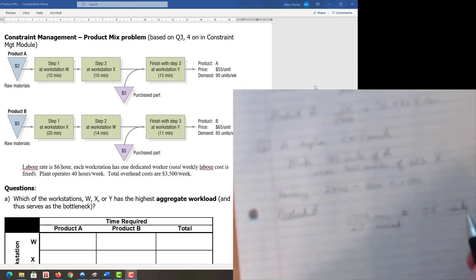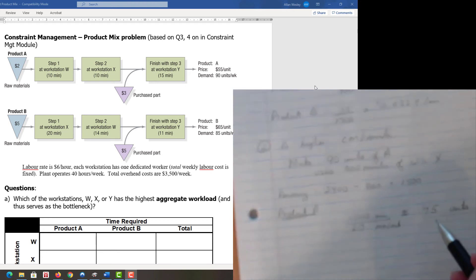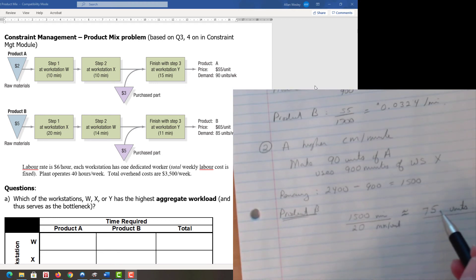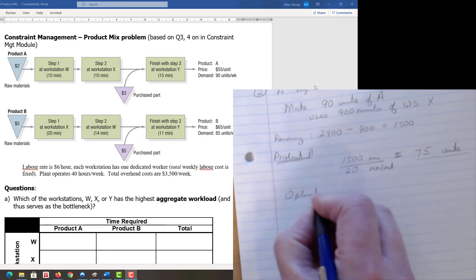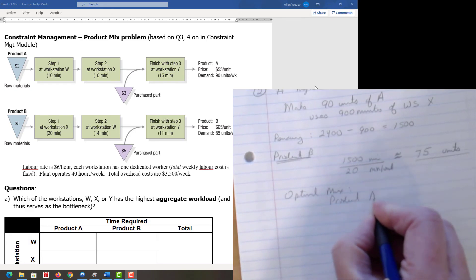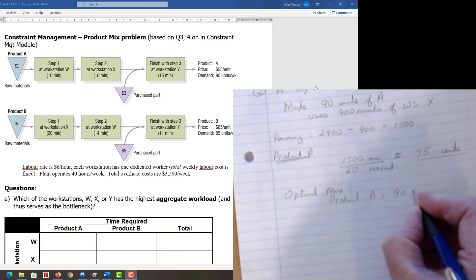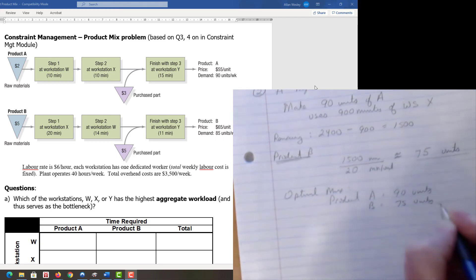If we have a remainder, we always round down, because if we only have a couple of minutes and don't have the full 20, we can't make a full product. Nobody wants a partial product because that's essentially a broken product. Our optimal mix—by optimal we mean profit maximizing—is 90 units of product A and 75 units of product B.